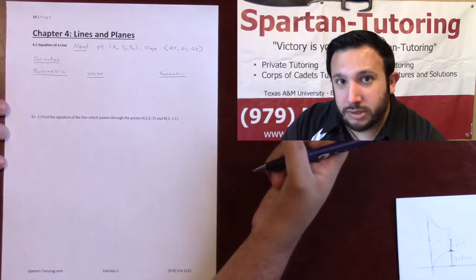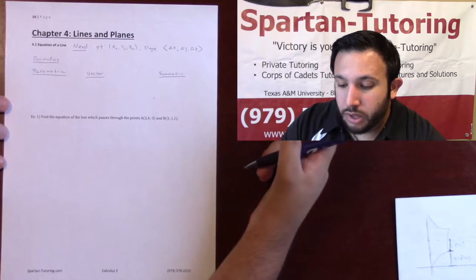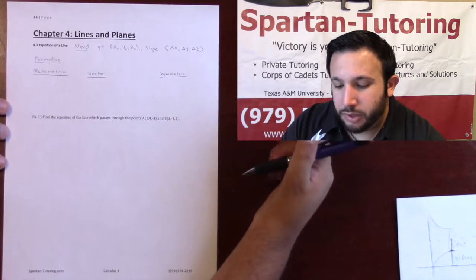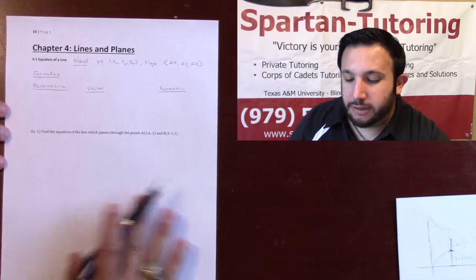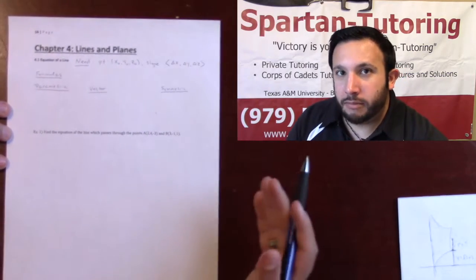Once you find your point and your slope, there are three different types of formulas that you can plug it into. So let's first talk about if they say, find the equation of a line and write it in parametric form.